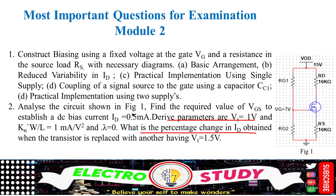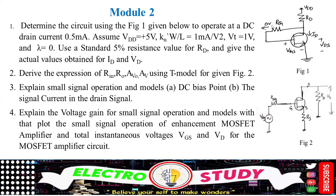There are a few more questions. Kindly watch completely to get a better idea. There is another diagram. The question is to determine the circuit using figure 1 given below, operated at a DC drain current of 0.5 milliampere. Presume that VDD is plus 5 volts, KN is 1 milliampere per V squared, VT is 1 volt, and lambda is 0. Use standard 5% resistance values for RD and give the actual values obtained for ID and VD.